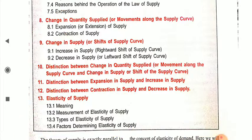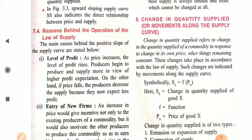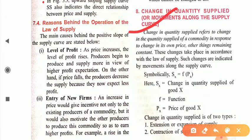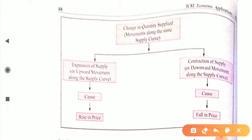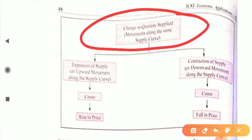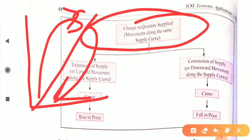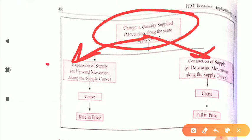Let's start with today's topic: change in quantity supplied. Change in quantity supplied, or movement along the supply curve, simply means change in quantity supplied of a commodity in response to a change in its own price, while all other things remain constant. Always keep in mind that this involves movement along the same supply curve.